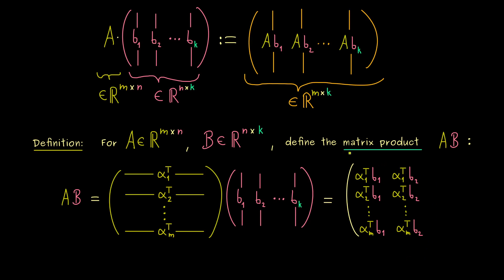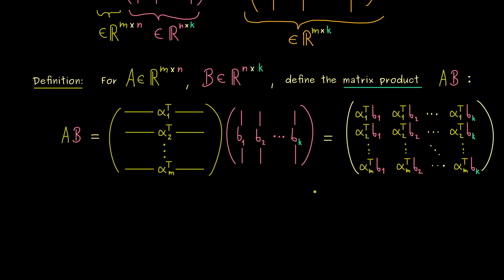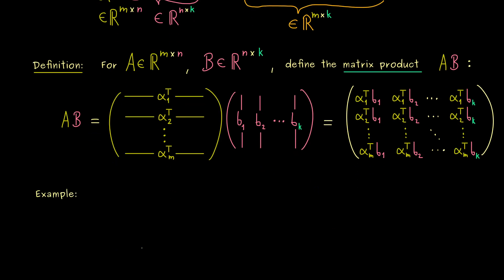Moreover, by the row picture we know that the next entry should be alpha2 in the inner product with B1, and then we continue until we get alphaM with B1. The second column should look like this with B2, and then as before we continue until we have the whole matrix. Hence, in order to get a particular entry of the new matrix AB, we have to calculate an inner product — choosing the correct row and the correct column. I think this is a very good way to remember this important matrix product. Let's look at an example.